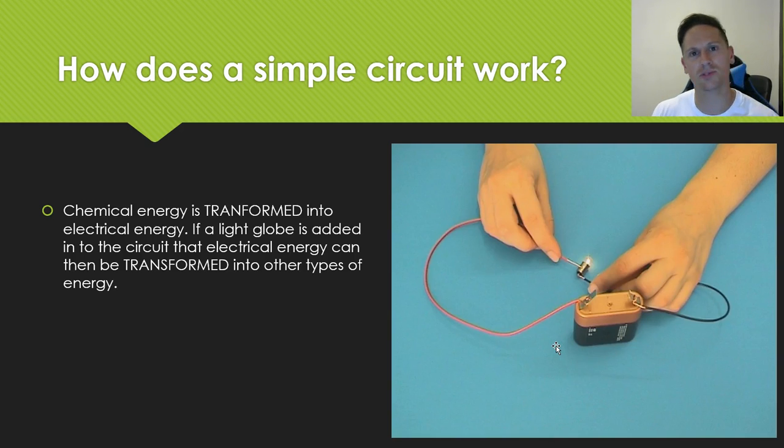So how does a simple circuit work? Here we've got a very simple circuit. We've got a battery which is connected via wires to a globe. And the globe introduces load into that circuit. So basically what's happening here is the electrons are moving around that circuit and they get into the light globe. Now the light globe introduces a little bit of electrical resistance, which is called load.